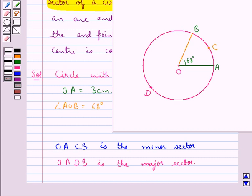Major sector is formed by the major arc of the circle and the minor sector is formed by the minor arc of the circle. So, we have drawn a circle with radius 3 cm and having a sector of angle equal to 68 degrees.